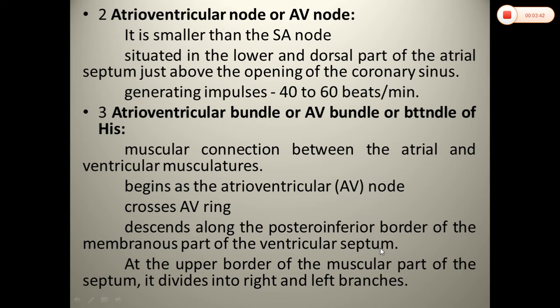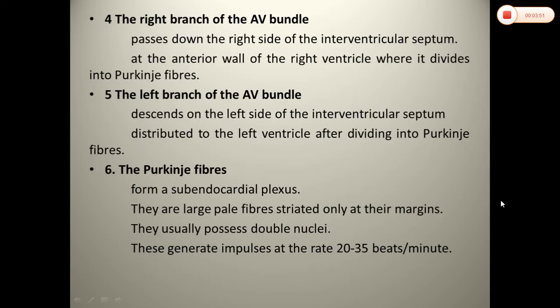The bundle bifurcates into the right and left bundle branches. The right bundle branch passes down the right side of the interventricular septum, reaching the anterior wall of the right ventricle, where it divides into Purkinje fibers.